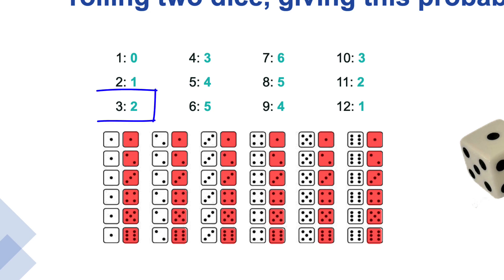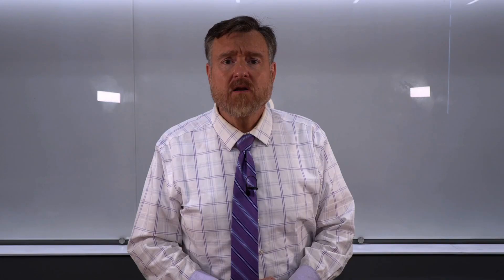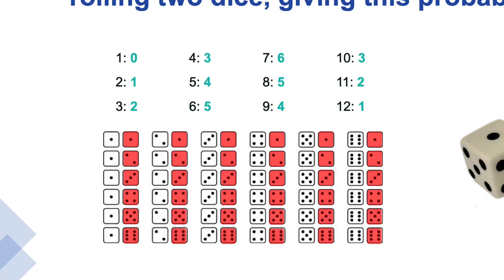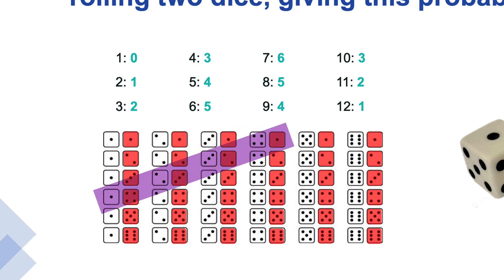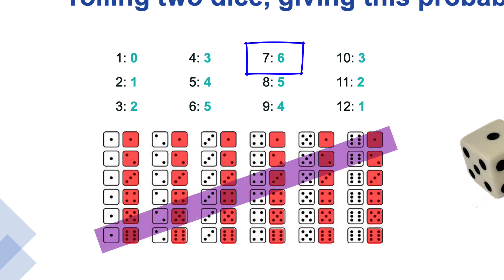There are two ways that we could get a score of three, which would either be a one and a two, or a two and a one. Notice that we are using permutations for this kind of counting. There are three ways to get to four, four ways to get to five, and the outcome with the most possibilities would be the value of seven. There are six different ways that we could get a combination of seven on a pair of dice.